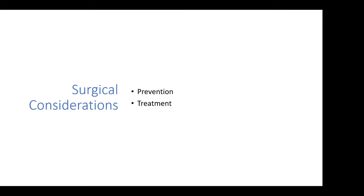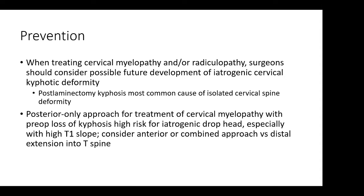In terms of what surgery to do, first we have to think about how to prevent cervical deformity and then how to treat it when it does happen. All spine surgery is deformity surgery to a certain extent, and we have to be careful that we're not putting patients at risk with a surgery done for neurologic compromise. When treating cervical myelopathy and radiculopathy, surgeons should consider the possible future development of iatrogenic cervical kyphotic deformity, as post-laminectomy kyphosis is still the most common cause of isolated cervical spine deformity. For posterior-only approaches in patients with pre-op loss of lordosis — who are at highest risk of iatrogenic drop-head and post-laminectomy kyphosis, especially with high T1 slopes — surgeons should consider anterior combined approaches or extending the fusion distally into the thoracic spine.